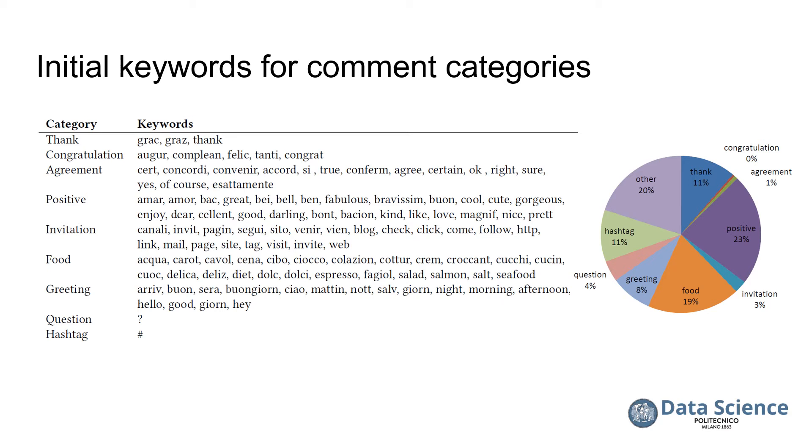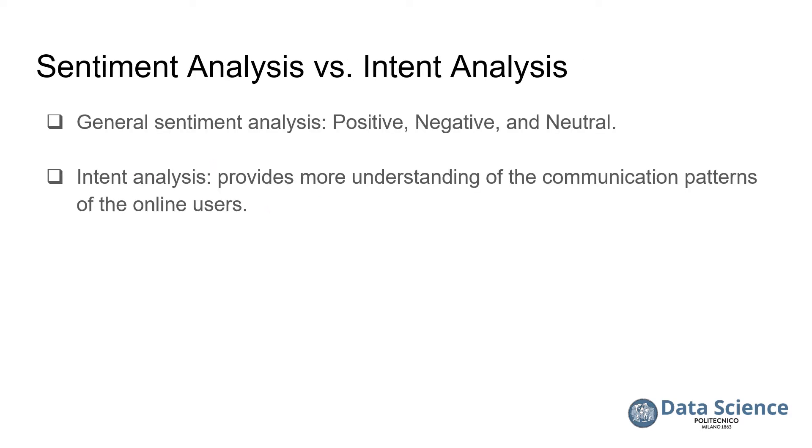With a subjective assumption, we conclude that the suitable categories for Instagram contents associated to the case study data are as follows: Thank, Congratulations, Agreement, Positive, Invitation, Food, Greeting, Question, Hashtag, and Other. The hashtag category denotes the type of comments that only contain words asserted with hash that may intend to specific information. The other category appoints to Instagram comments which cannot be assigned to any other class. The reason for selecting those 10 categories instead of a general sentiment analysis composed of positive, negative, and neutral is because we perform analysis on the data from a social media challenge that has engaged a significant number of users. In this study, we want to determine their intention and opinion about the game. We expect with more categories would come better understanding.